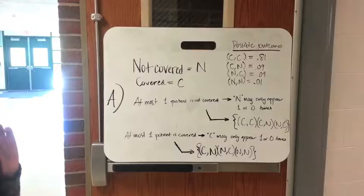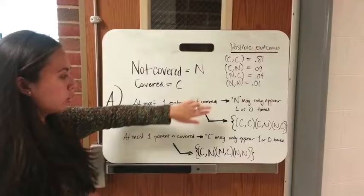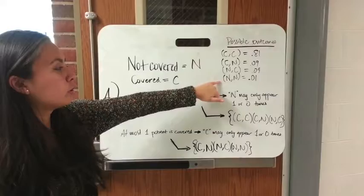And to find this, because all the probabilities add up to one, you're just going to add the ones in your set. So if you're looking at at most not covered, you're going to do the top three. Basically just don't include the one that's not covered, not covered.